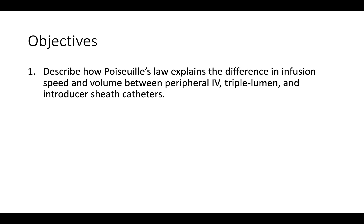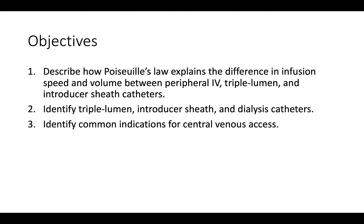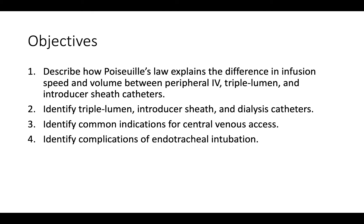Our objectives for the session are: describe how Poiseuille's law explains the difference in infusion speed and volume between peripheral IV, triple lumen, and introducer sheath catheters; identify triple lumen, introducer sheath, and dialysis catheters; identify common indications for central venous access; and identify complications of endotracheal intubation.